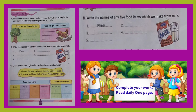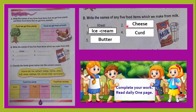Next, you need to write the names of all the food items which we make from milk. Here are the names of the food items. First is your answer: cheese, second is ice cream, third is curd, fourth is butter — 5 food items from milk. You can write all of these, so correct, and you can understand.